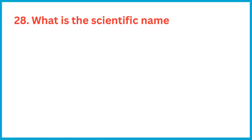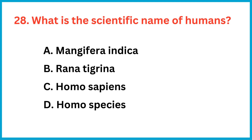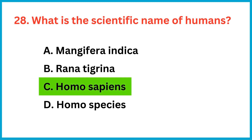What is the scientific name of humans? The correct answer is option C: Homo sapiens.